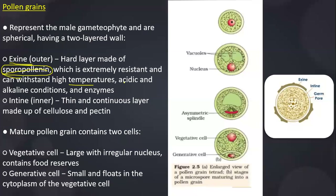No temperature, no acid, no base or enzyme can degrade sporopollenin because it is extremely resistant to all these conditions. The inner layer, the intine, is made up of two components: cellulose and pectin. Once again, the pollen grain consists of two main cells — a large vegetative cell with an irregular nucleus, and a generative cell which is a small cell containing two male gametes.